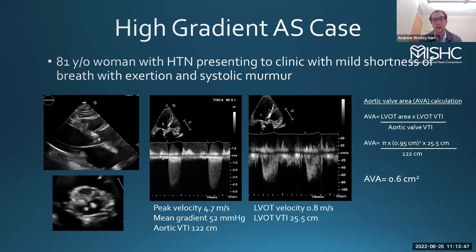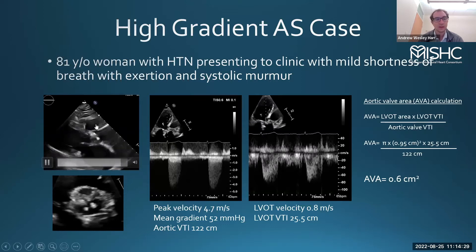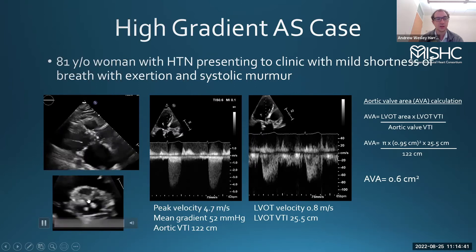Here's a case: an 81-year-old woman with hypertension presenting with mild shortness of breath on exertion and a known systolic murmur. On echo, the left ventricle is squeezing well with normal function and a little hypertrophy. The aortic valve is very calcified and doesn't move well at all. From a short-axis view, it's a heavily calcified structure with very restricted motion.